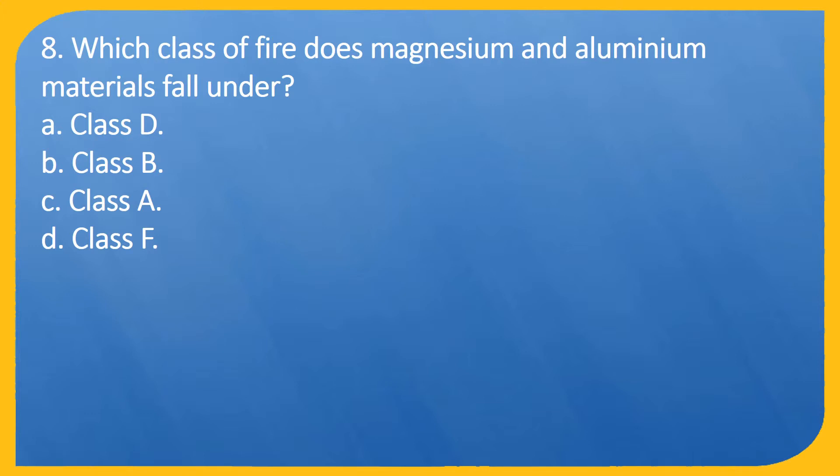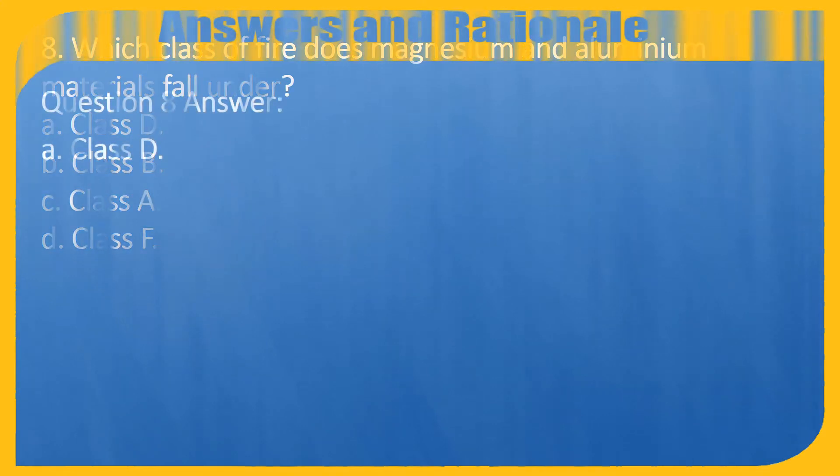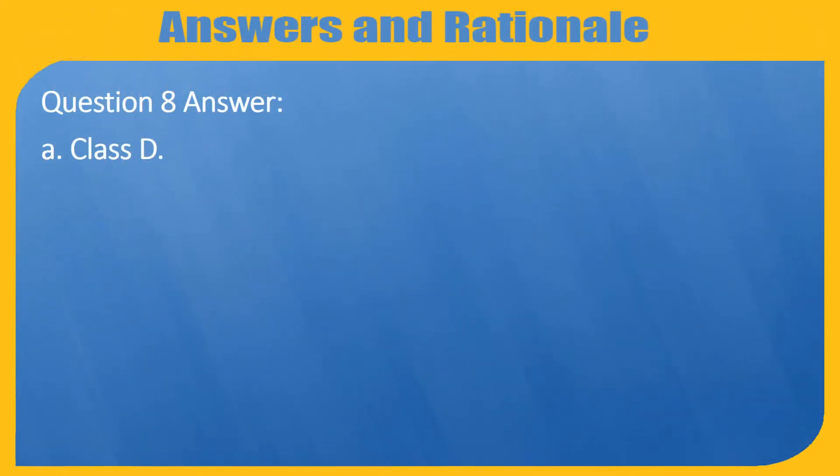Question 8. Which class of fire does magnesium and aluminium materials fall into? A. Class D. B. Class B. C. Class A. D. Class F. Question 8 answer: A.